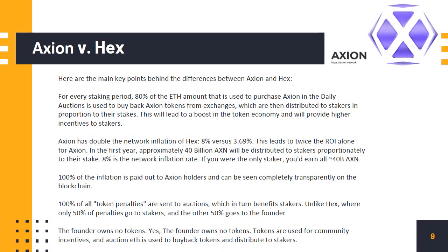Axion vs. HEX. Here are the main key differences between Axion and HEX. For every staking period, 80% of the ETH used to purchase Axion in the daily auctions is used to buy back Axion tokens from exchanges, which are then distributed to stakers in proportion to their stakes. This leads to a boost in the token economy and provides higher incentives to stakers. Axion has doubled the network inflation of HEX: 8% versus 3.69%, leading to twice the ROI for Axion.